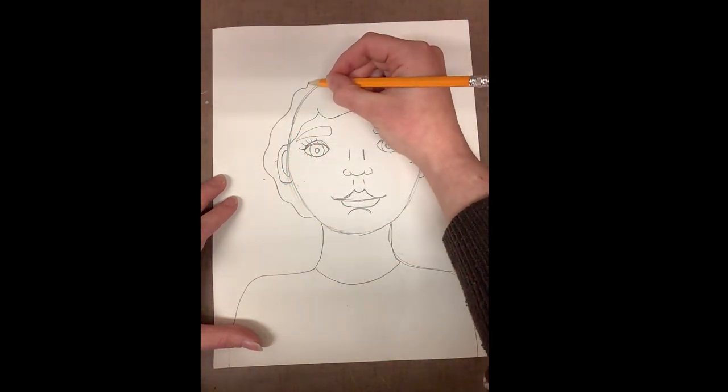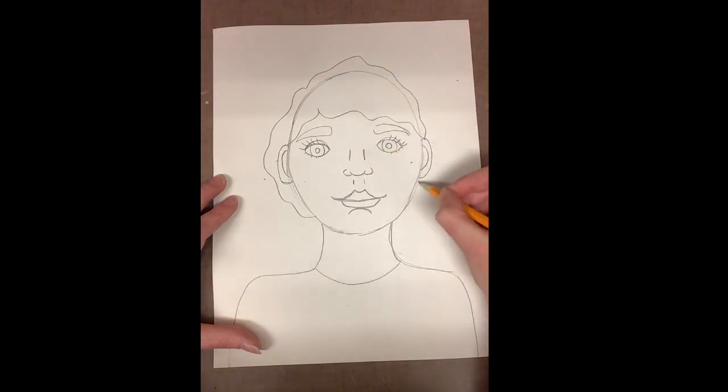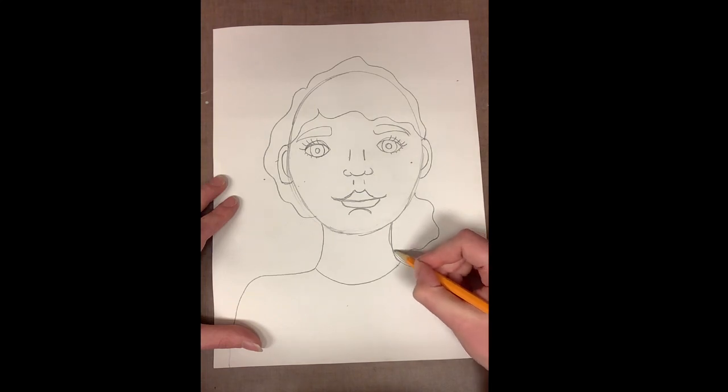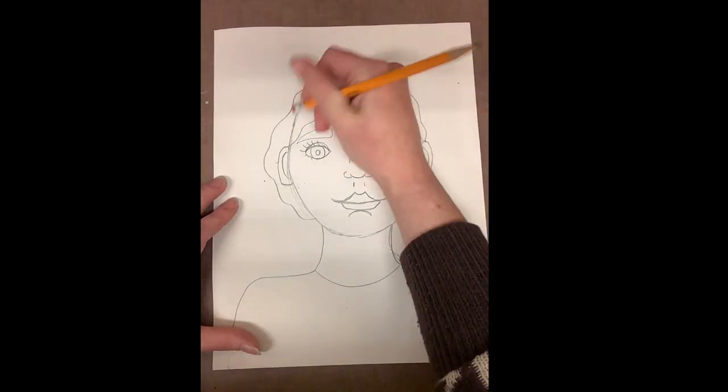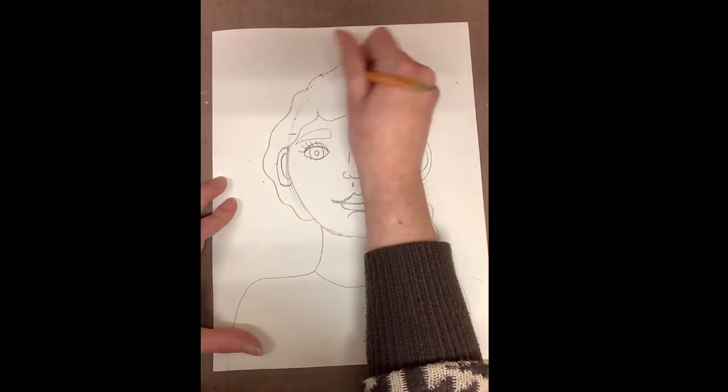Think about the general shape of your hair. Does your hair go around your head? Is it flat on your head? Do you have curly hair or straight hair? If you have curly hair, you probably want to use curving lines. If you have straight hair, you probably want to use straight lines to draw your hair.